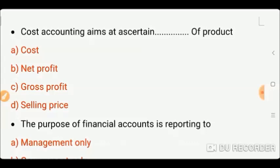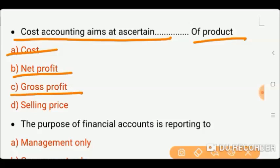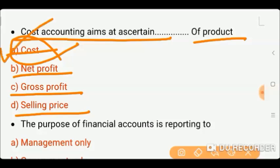Next question: Cost accounting aims at ascertaining — cost accounting aims at ascertaining the cost of a product: how much cost is involved in the production of a product. So the correct answer is option A.